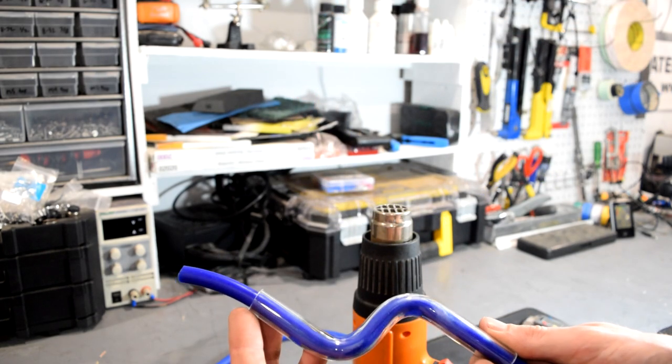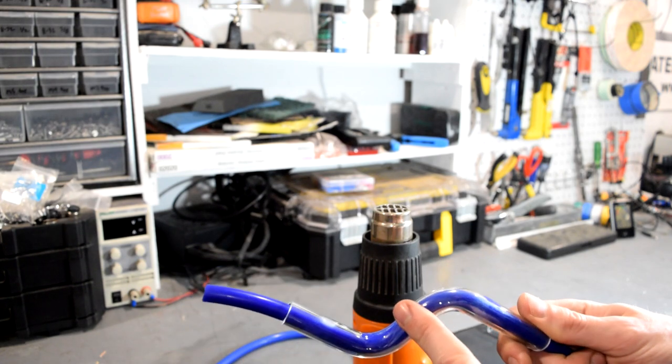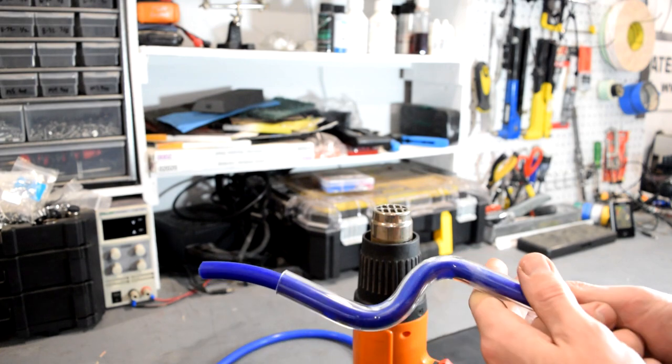Here goes the first test with a smaller insert. Remember this guy is about 10.6 or 10.7 millimeters. Tubing is 11.5. Here's two bends.